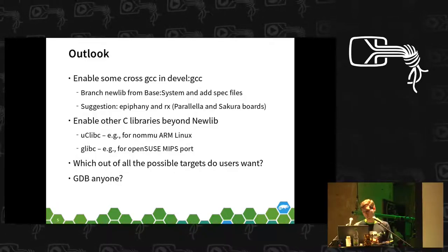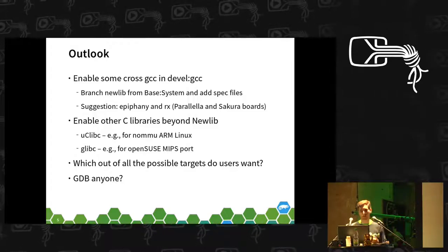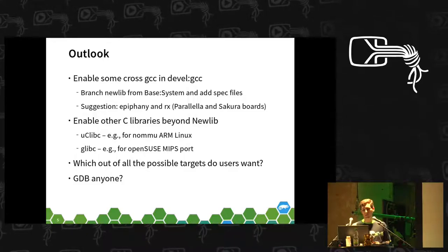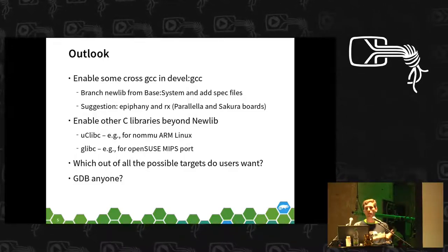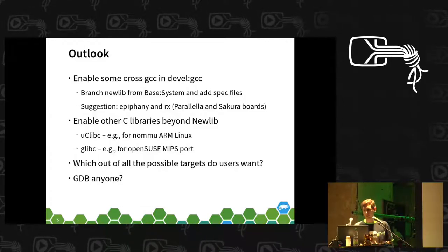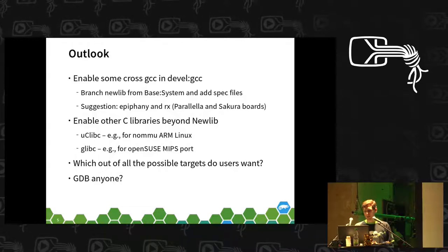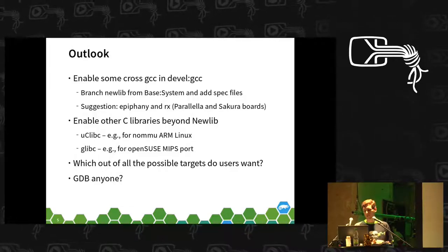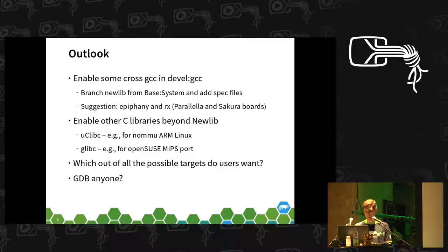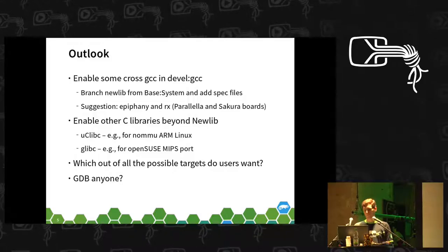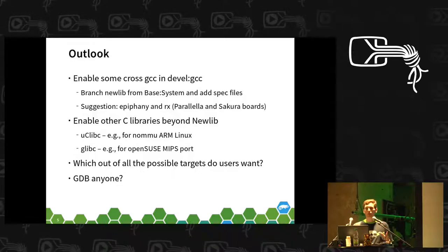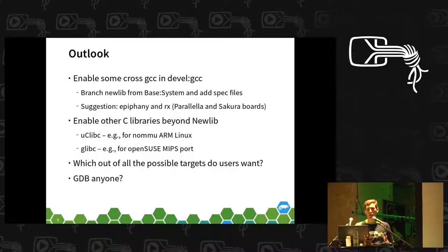Beyond newlib, that's not the only way cross-compilers can be built. There is also uclibc — I have, or at least used to have, a cross-compiler toolchain in home:aferber:UCLinux using uclibc for a no-MMU ARM build, what was formerly known as UCLinux. I've also been using a very similar concept for the glibc-based OpenSUSE MIPS port I was talking about earlier.